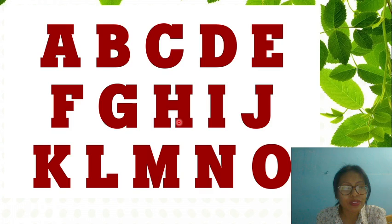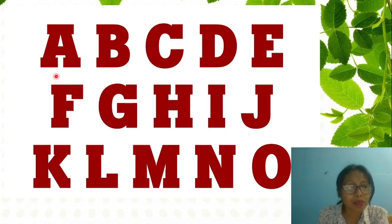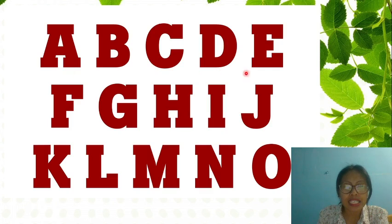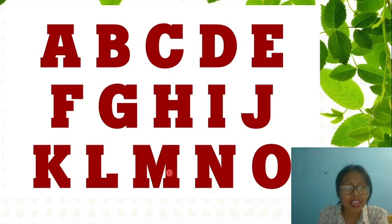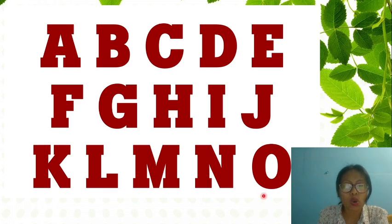Now let's read all the letters together by name and by sound. Let's read by name: A, B, C, D, E, F, G, H, I, J, K, L, M, N, O.